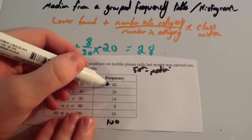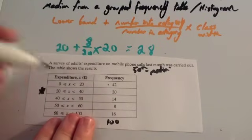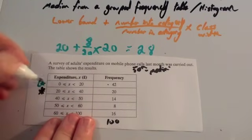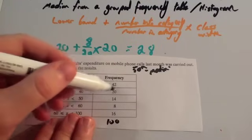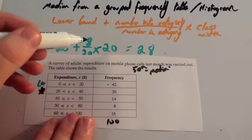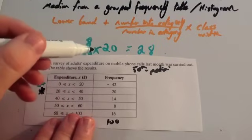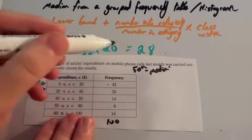The 25th person would be in this category here. So we would star that. Lower quartile is in this one. And we would do lower bound, 0, plus number into category. We're looking for the 25th person. So it would be 25 out of 42 times by the class width, which is 20.